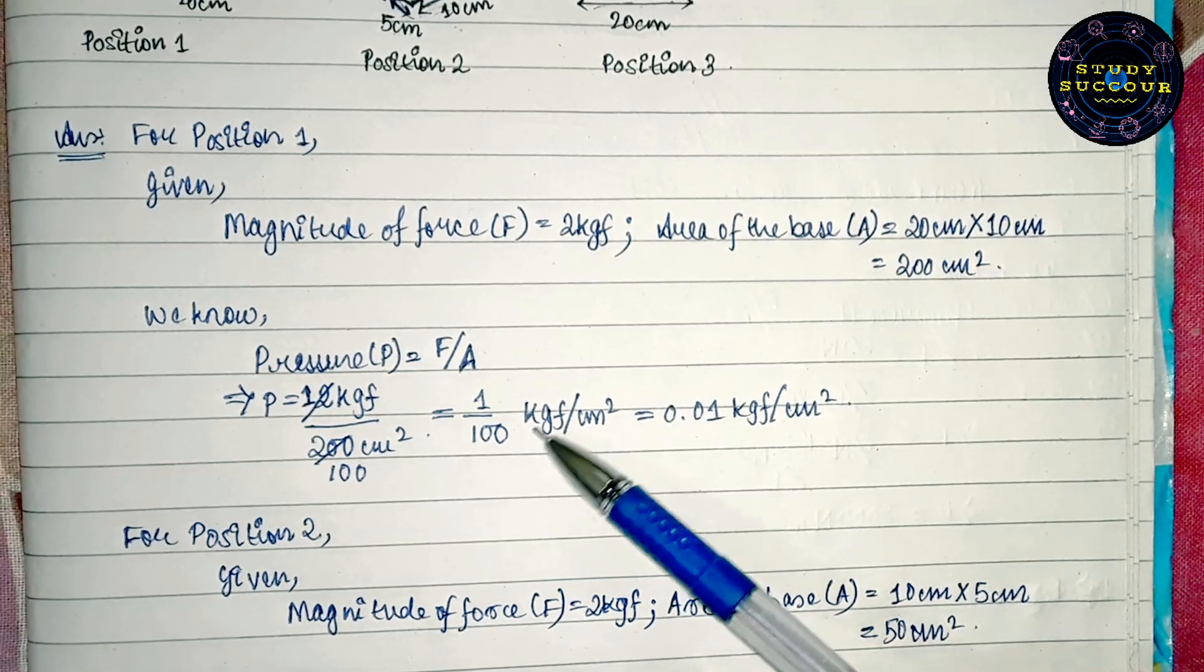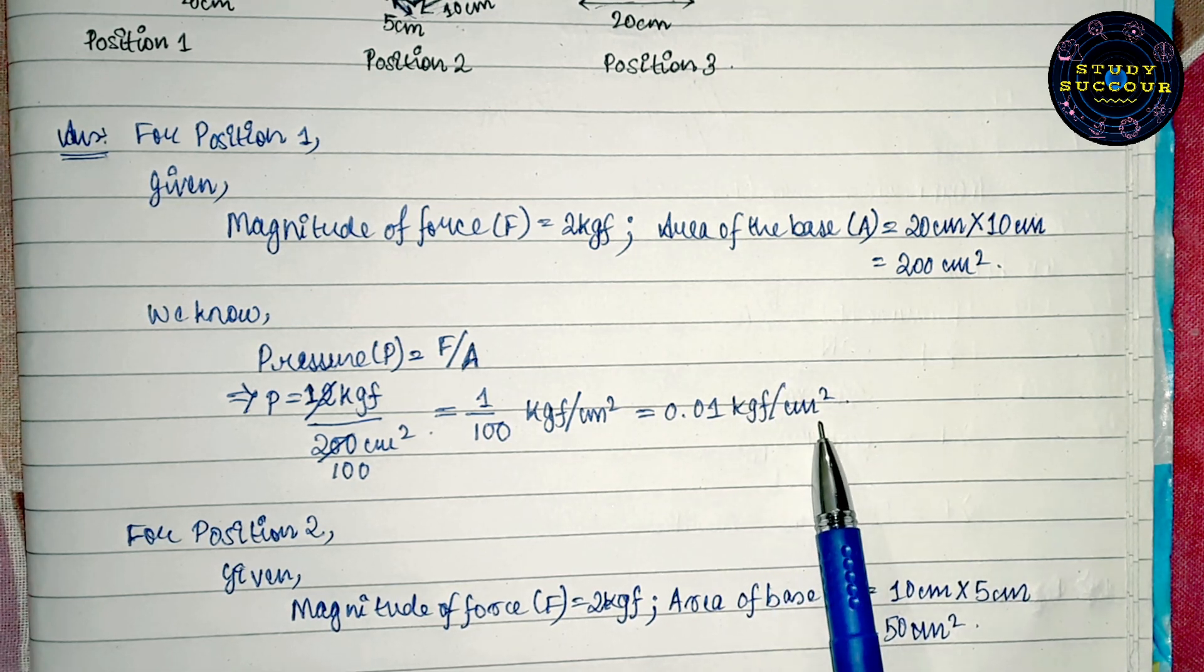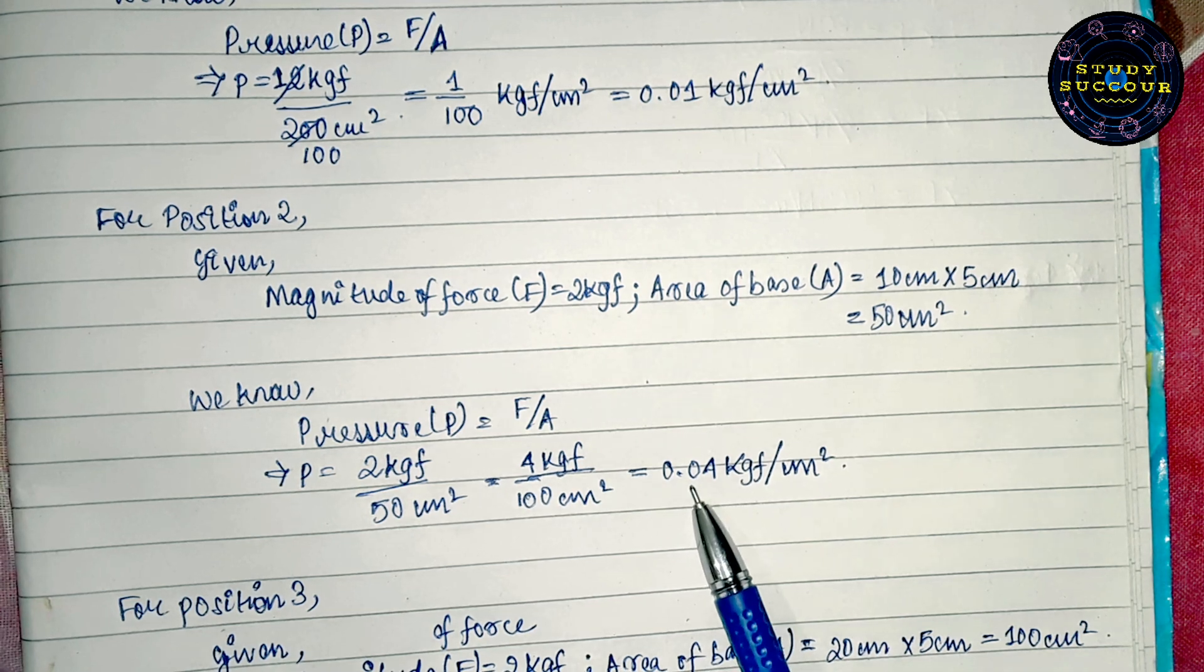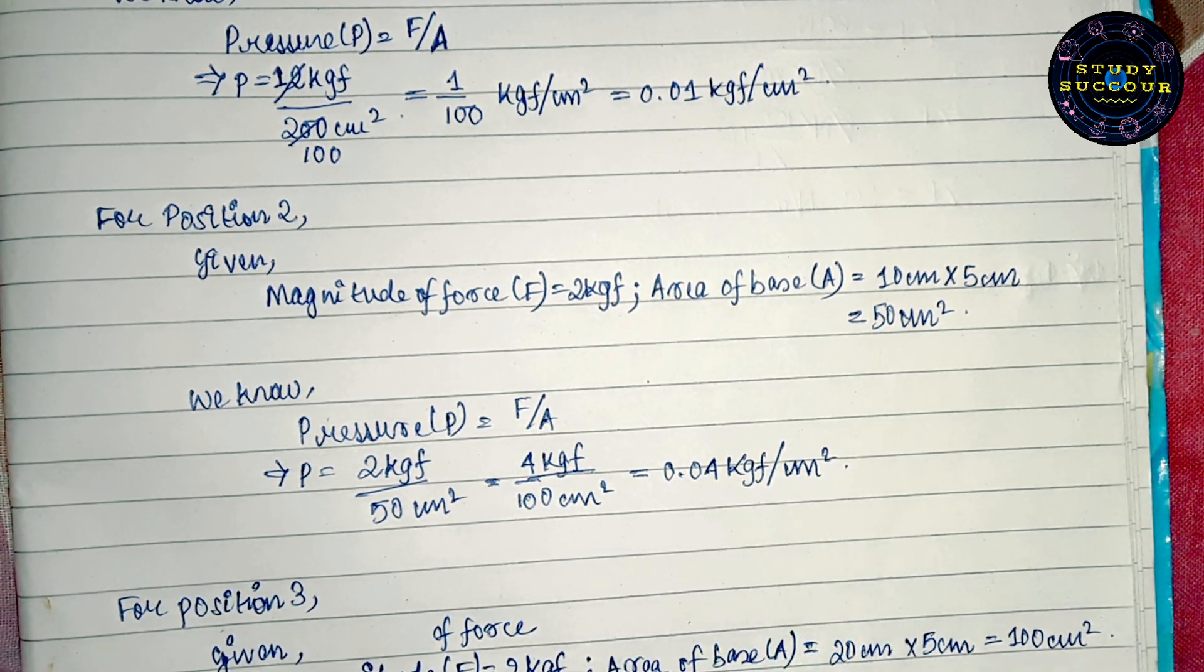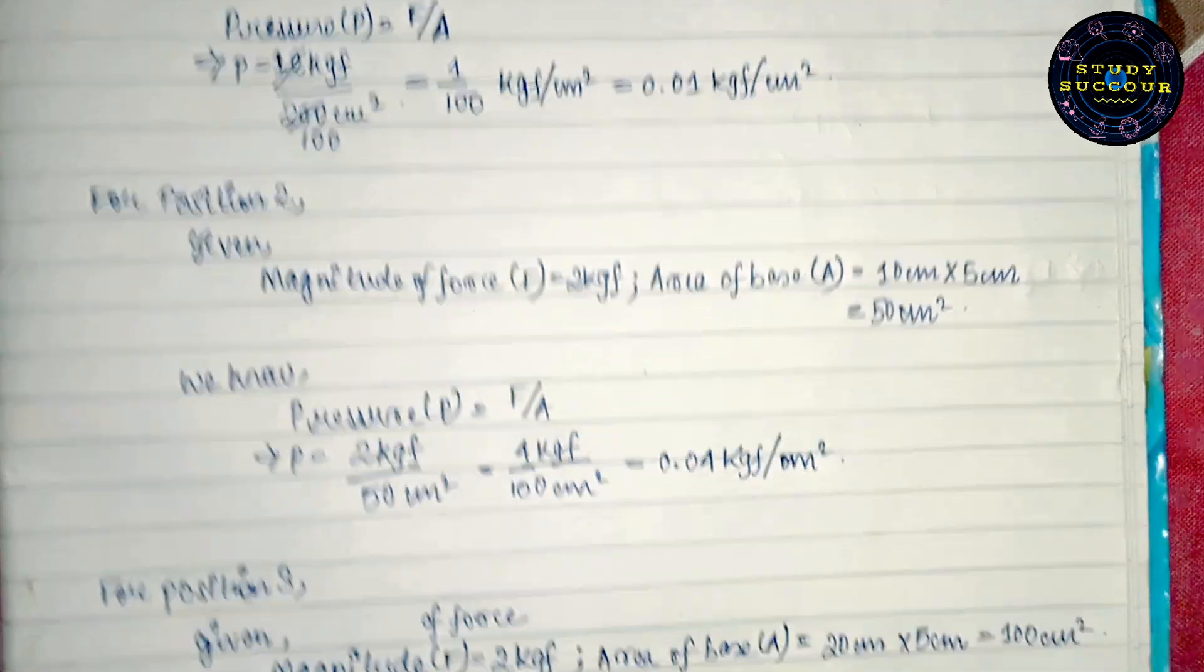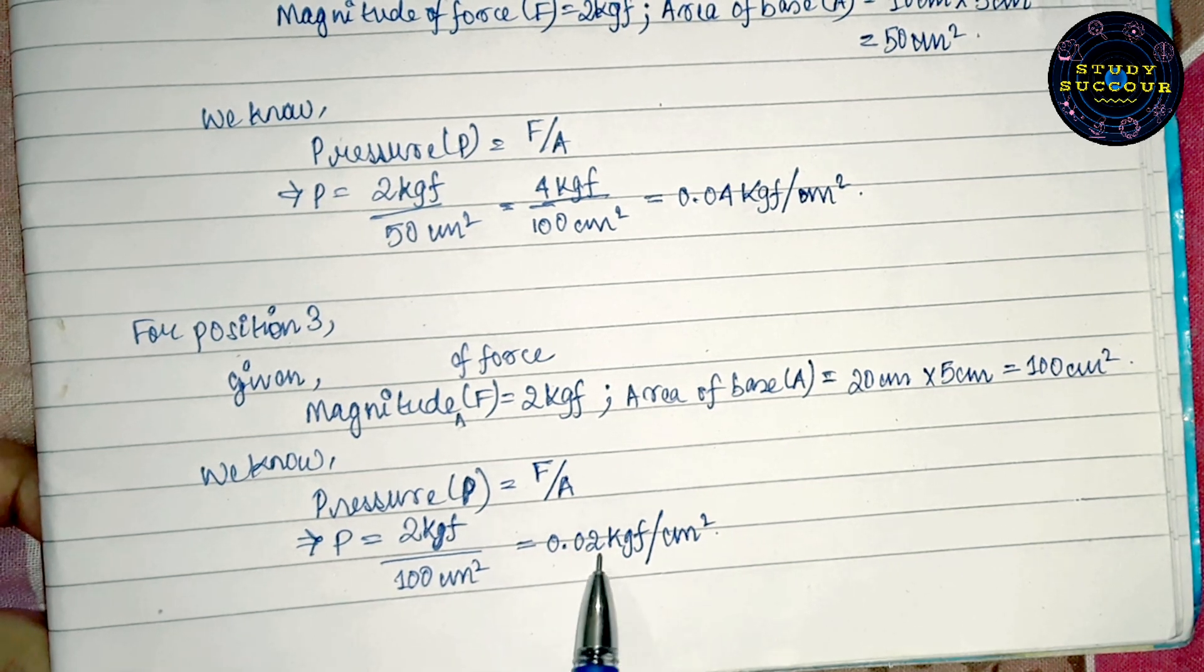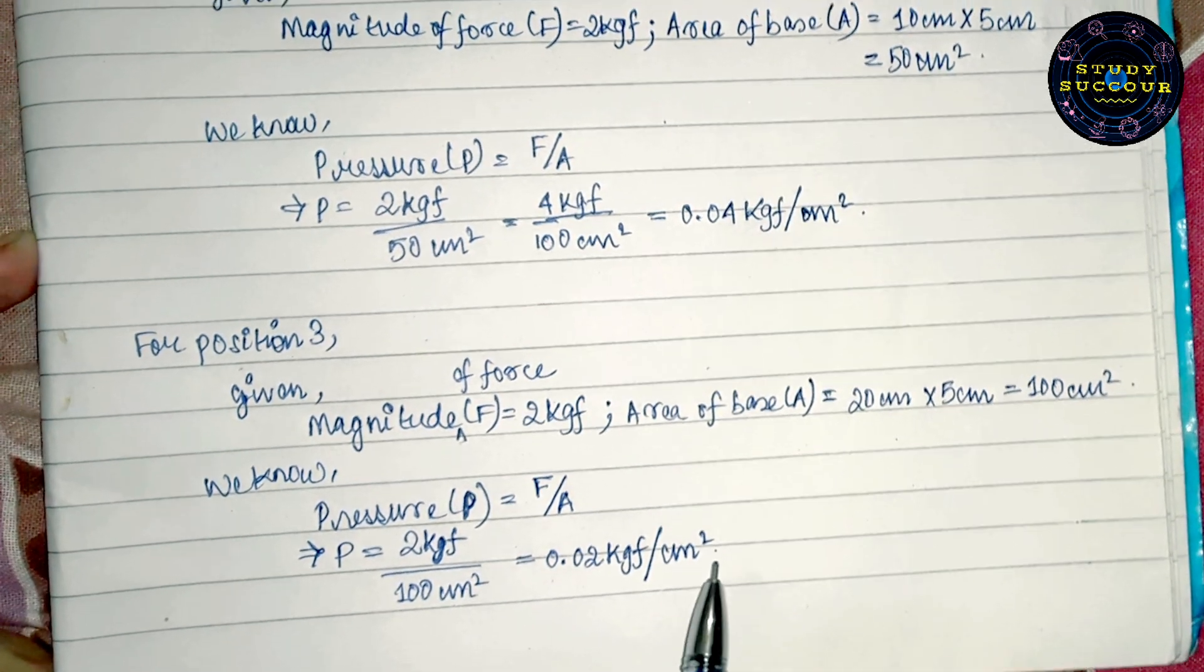All these three are our final answers. For position 1, our final answer is 0.01 kgf per cm². For position 2, our final answer is 0.04 kgf per cm². And for position 3, our final answer is 0.02 kgf per cm².